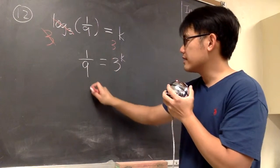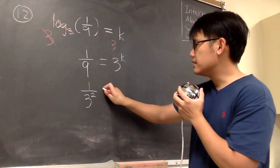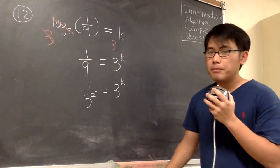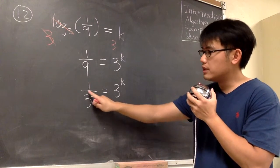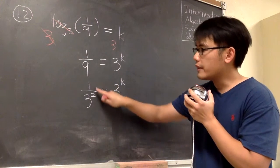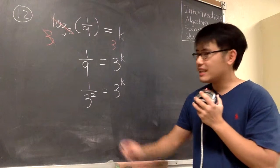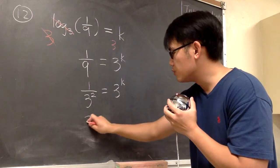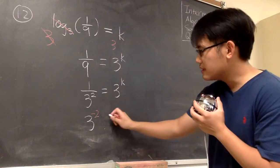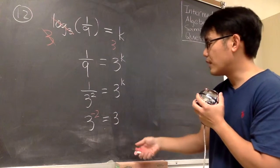So I can look at 1 over 9 as 1 over 3 squared, and this is equal to 3 to the k's power. But the 3 to the second power is in the denominator — we don't want that. However, 1 over 3 to the second power — we can use a negative exponent for this. This is the same as 3 to the negative 2 exponent, and on the right-hand side, this is equal to 3 to the k's power.